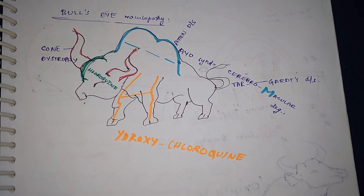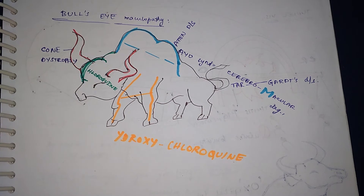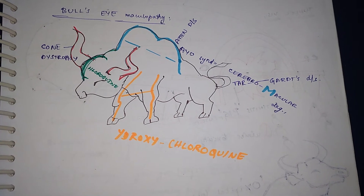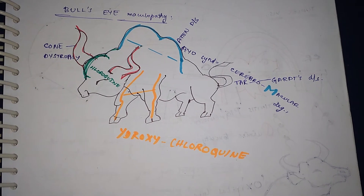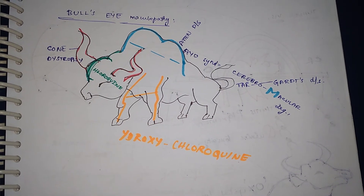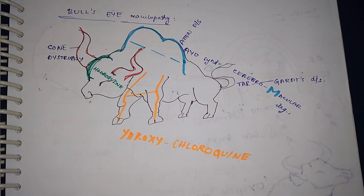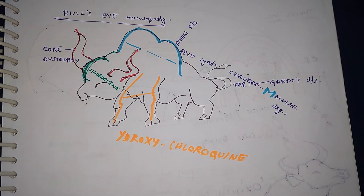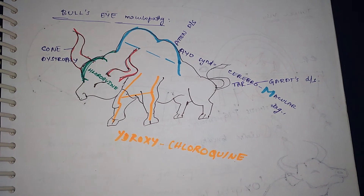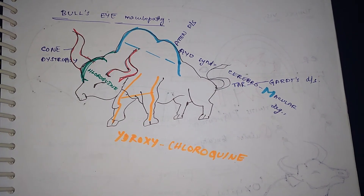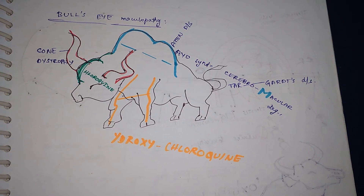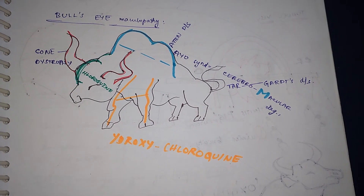The horns of the bull represent the cones, so it stands for cone dystrophy. The face curvature is like the letter C, so there I have put chloroquine. The front two legs, as you can see, look like the letter H, so that stands for hydroxychloroquine.